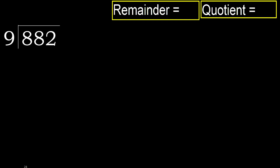882 divided by 9. 8 is less, therefore next. 88 is not less, therefore we work with 88.